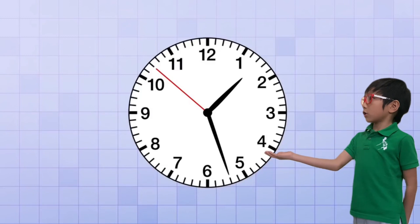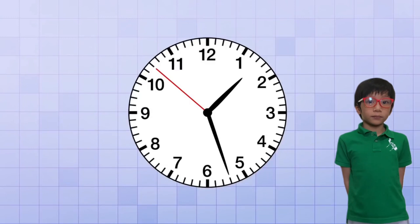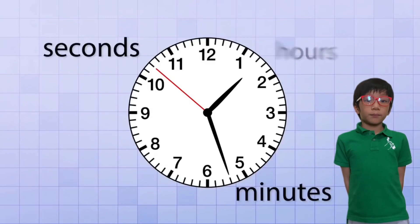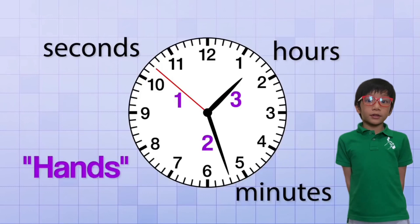This is an analog clock. It has three different pointers to know the three different units of time: seconds, minutes, and hours, and they're also known as hands.